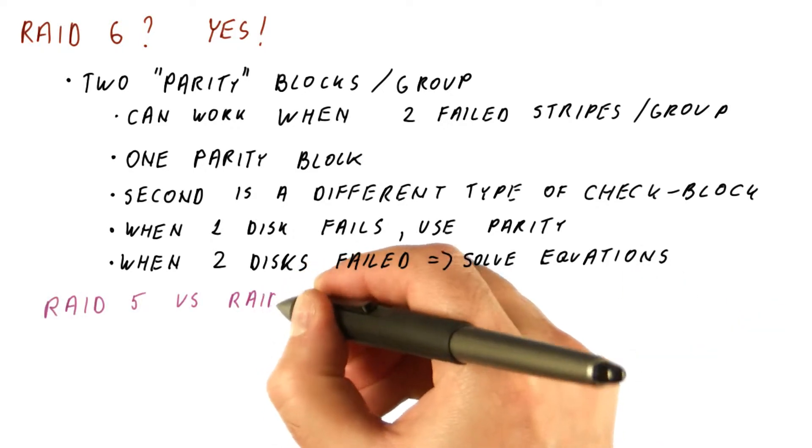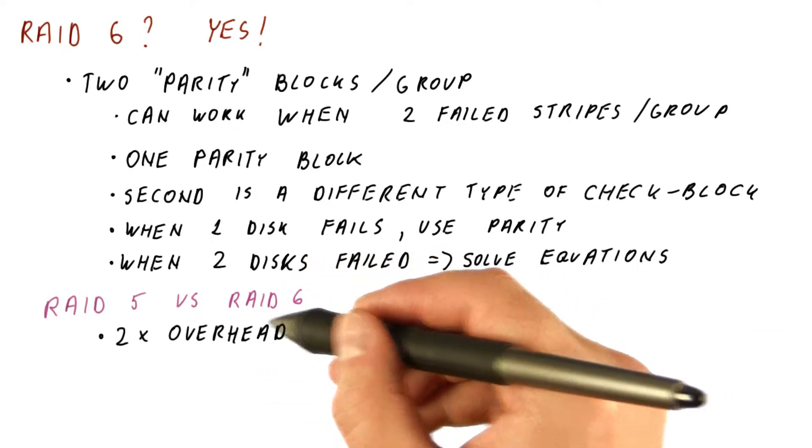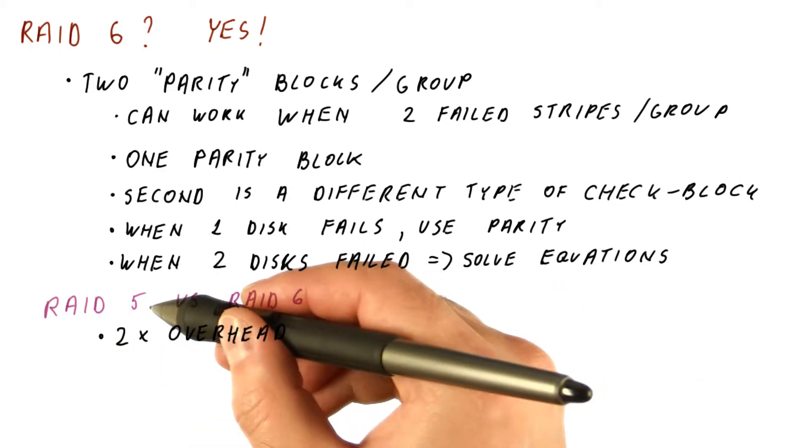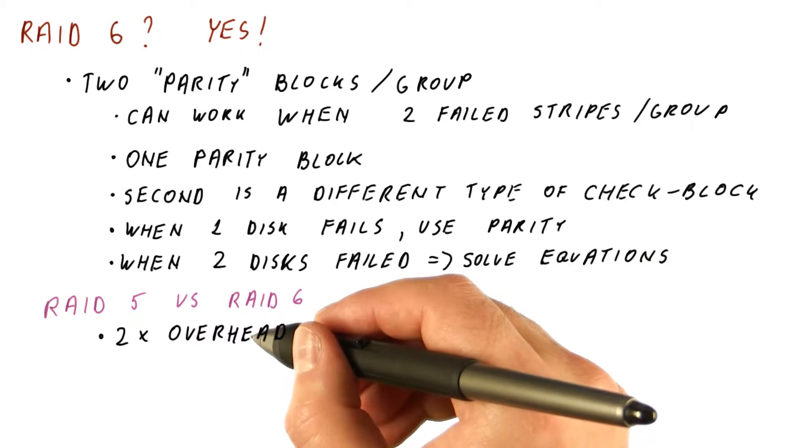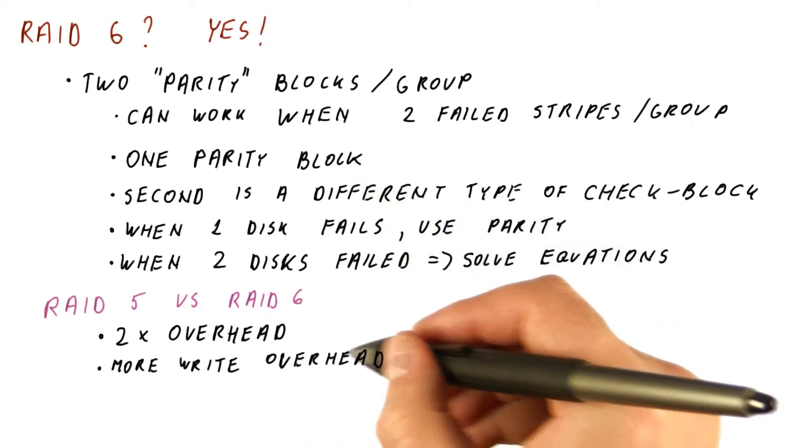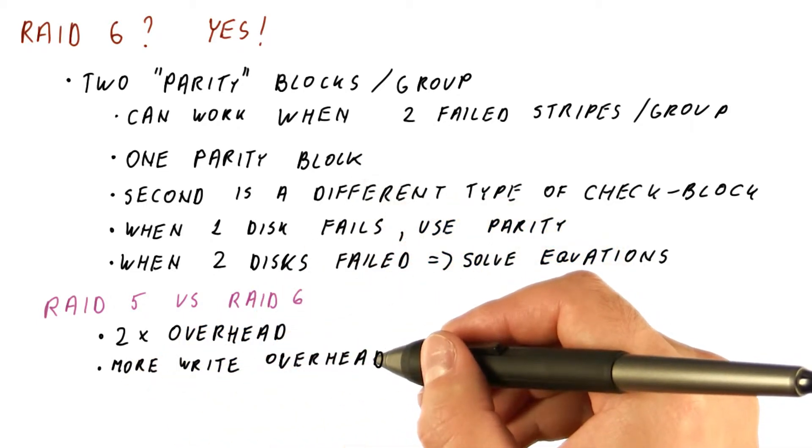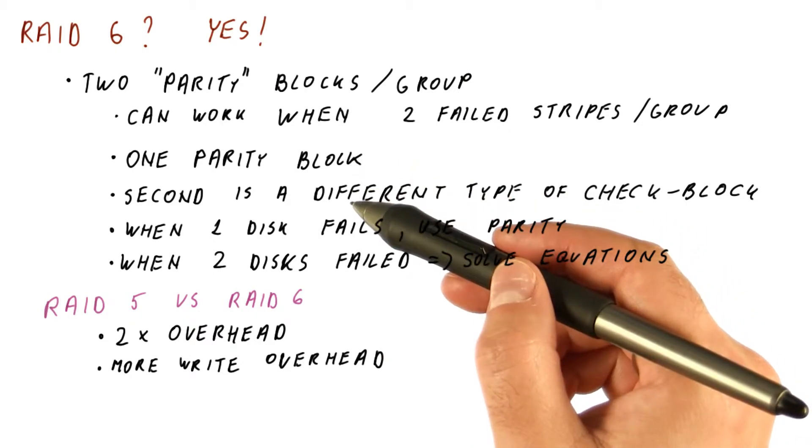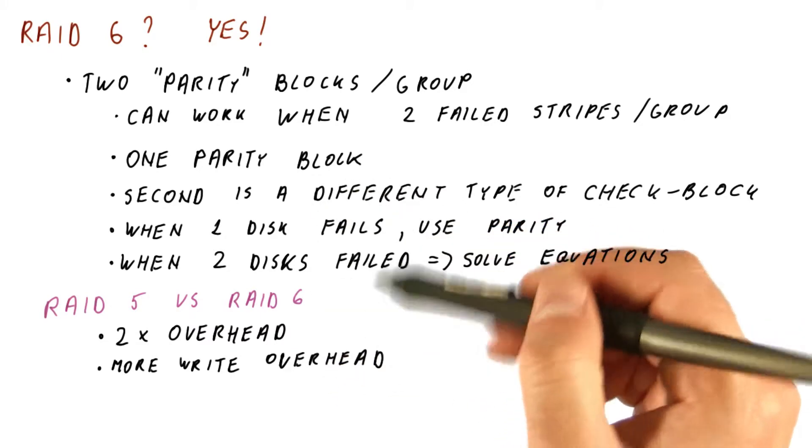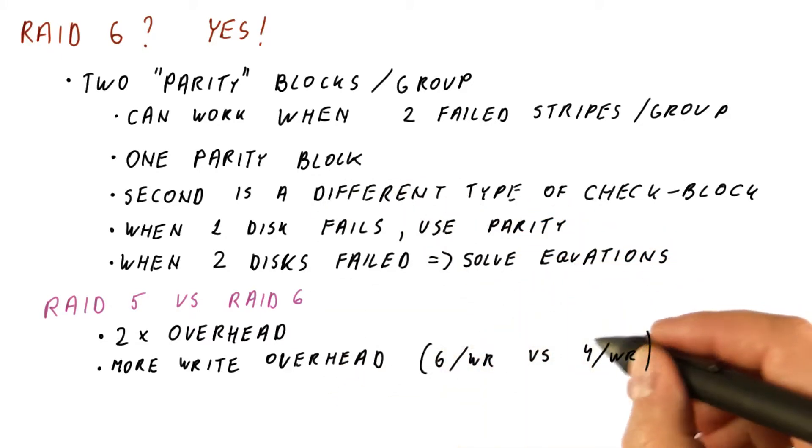So let's compare RAID 5 and RAID 6. RAID 6 has twice the overhead of RAID 5, so we pay twice as much for the increased reliability. There is more write overhead, because really now when we update a data block, we need to read and write the data block and both of the check blocks, the parity and the second one, are also read and written. So there are now six accesses per write versus four per write that we had with RAID 5.